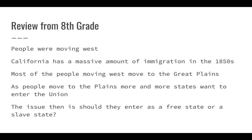As a review from 8th grade: when events take place in the 1860s and previously, people are moving west. California sees a massive amount of immigration in the 1850s. Most people moving west go to the Great Plains—north of Oklahoma to places like Missouri. As people move to the Great Plains, more and more want to make their territory into a state of their own.